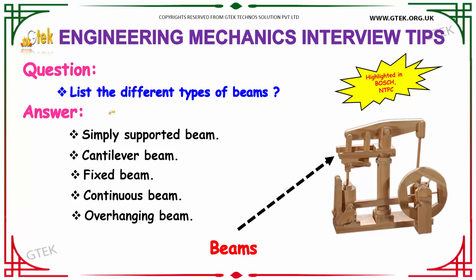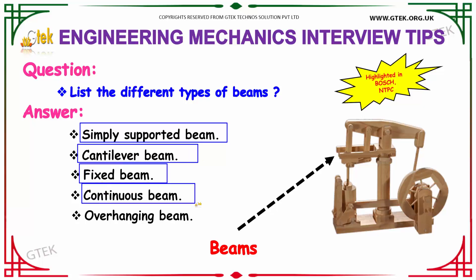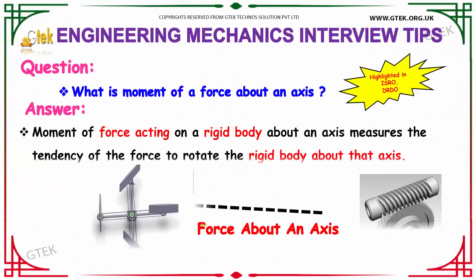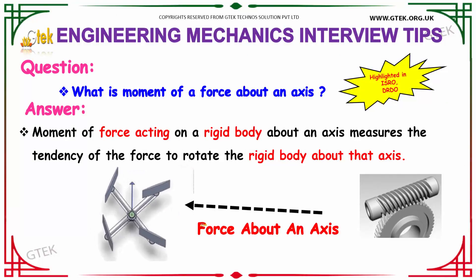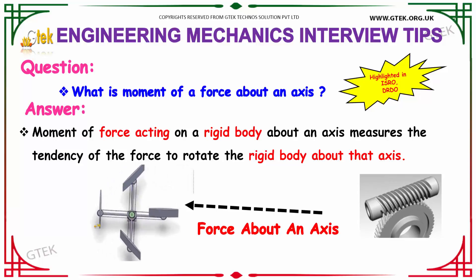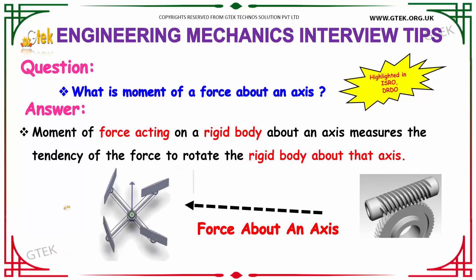Next question: list the different types of beams. The answer is: simply supported beam, cantilever beam, fixed beam, continuous beam, and overhanging beam. These are the different types of beams. The moment of force acting on a rigid body about an axis measures the tendency of the force to rotate the rigid body about that axis.